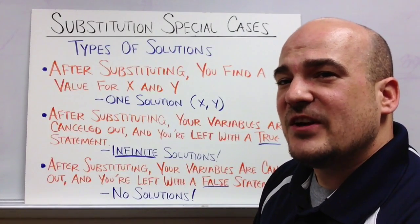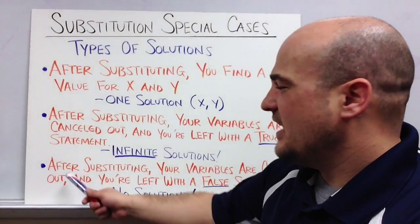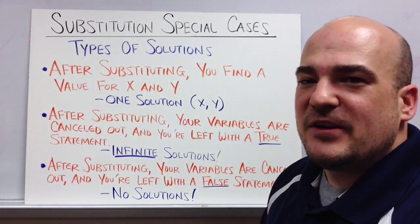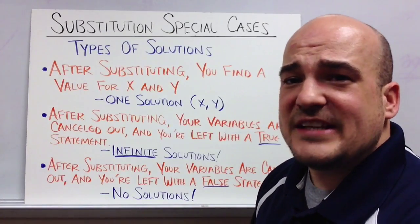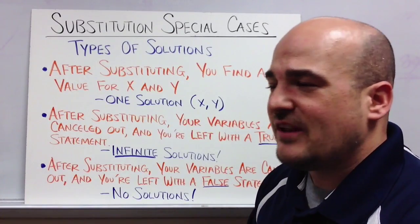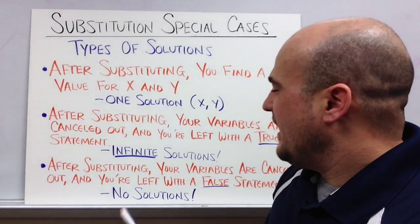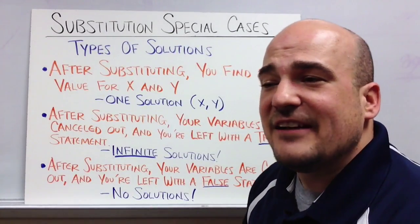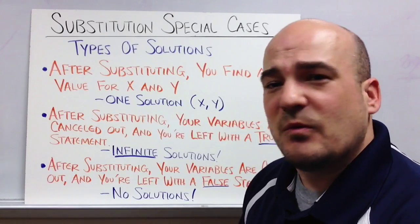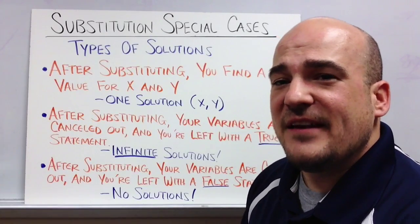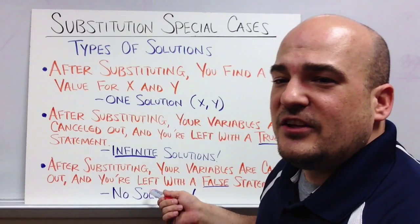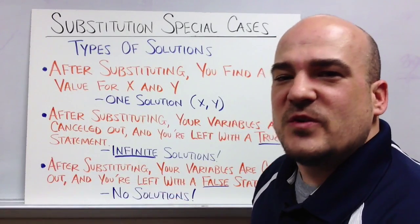And then the last thing that could happen when you use substitution is you do your substitution, and again, your variables disappear. They cancel each other out. Your 3x canceled out your negative 3x, and you're left with zero x's. And then you're left with a statement that's false. Like negative 5 equals 10. Well, no. Negative 5 does not equal 10. So if you're left with a false statement like that, then that means that your system of equations has no solutions. Those lines never cross.